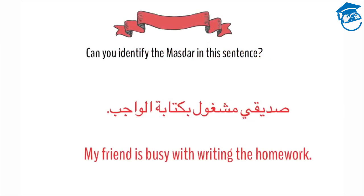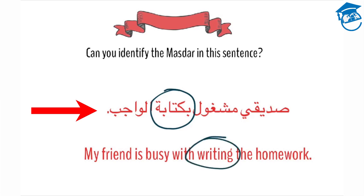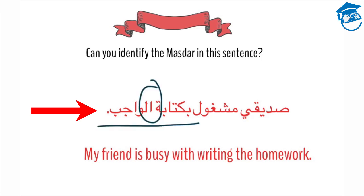Can you identify the masdar in this sentence? Siddiqui mashghul bi kitabat al-wajib. Listen again: Siddiqui mashghul bi kitabat al-wajib. Yes, the masdar is kitabah. Kitabah means writing. Earlier I mentioned that masdars are almost always definite. Can you tell me if this masdar is definite or indefinite? It's definite because it's part of an idafa. You know it's part of an idafa because you have two nouns joined without alif-lam.